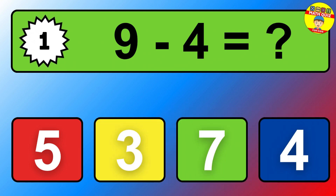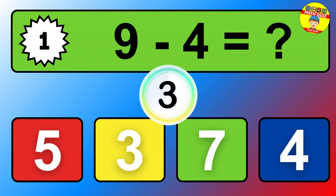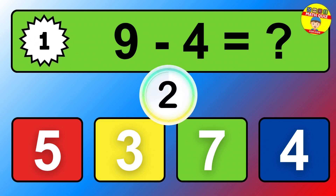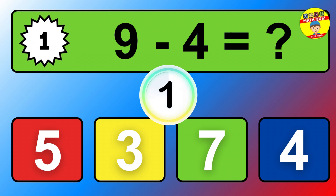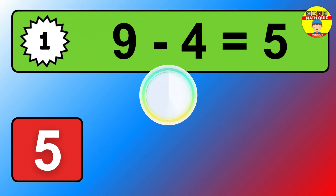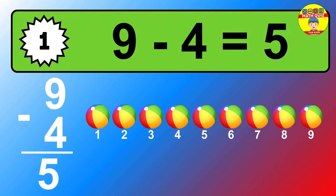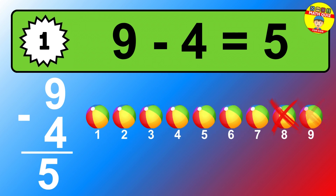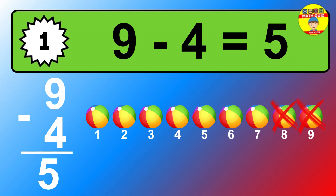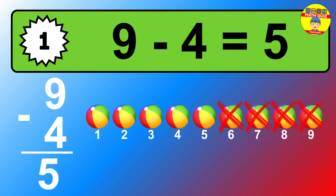Question one: nine minus four equals what? So the answer is nine minus four is five. Let's count it. One, two, three, four, five.